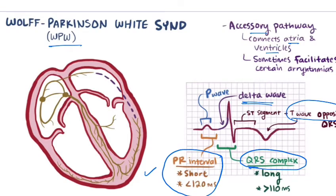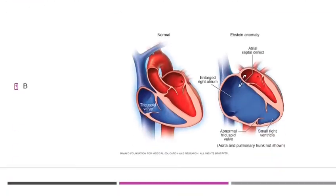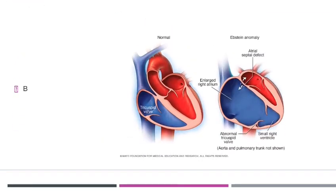One very important multiple choice question on WPW syndrome: the most common cardiac anomaly associated with WPW syndrome. The options are tetralogy of Fallot, Epstein's anomaly, VSD, and coarctation of aorta. The answer is Epstein's anomaly. What is Epstein's anomaly?